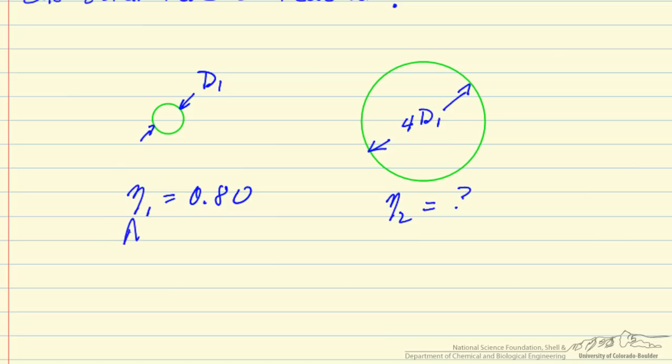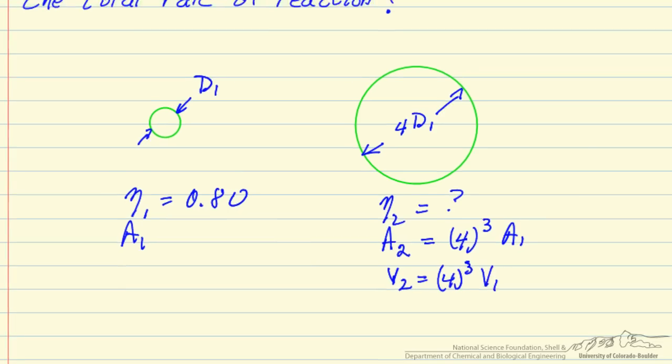We'll call the area we have for reaction A₁, so this is the area within the pores. The area A₂ is going to increase because we have more volume, and so the surface area is proportional to the volume, so this means that 4 cubed times A₁ corresponds to the area A₂ because the volume 2 is 4 cubed times the volume 1.